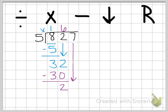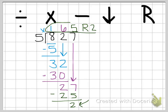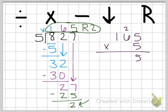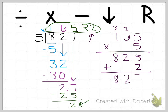Then we bring down our seven and repeat our steps. Five goes into 27 five times. Five times five is 25. And 27 minus 25 is two. There's nothing left to bring down and I have two left over. So my answer is 165 with a remainder of two. When we check this, we start with 165 and multiply it by five. Five times five is 25. Six times five is 30 plus two is 32. One times five is 5 plus three is 8. Then we add our remainder of two, giving us 827, which is what we started with.